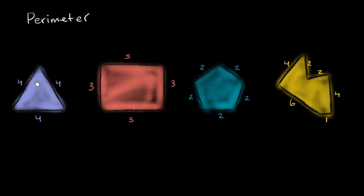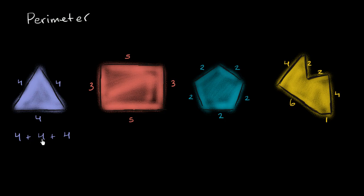So let's look at this first triangle right over here. It has three sides — that's why it's a triangle. So what's its perimeter? Here all the sides are the same, so the perimeter for this triangle is going to be 4 plus 4 plus 4. And whatever units this is — if this is 4 feet, 4 feet, and 4 feet, then 4 feet plus 4 feet plus 4 feet is equal to 12 feet.